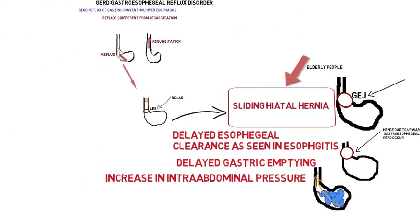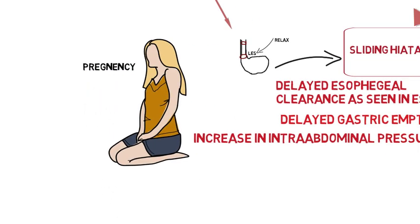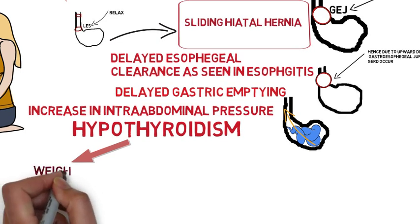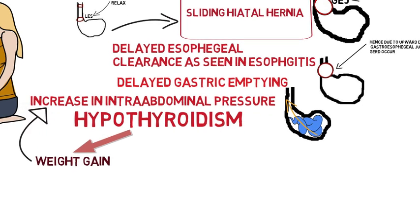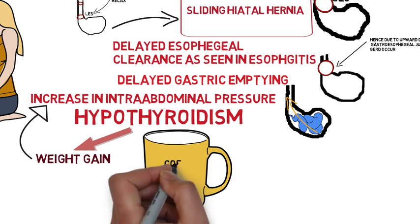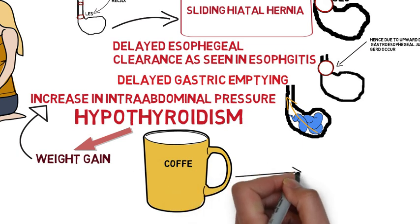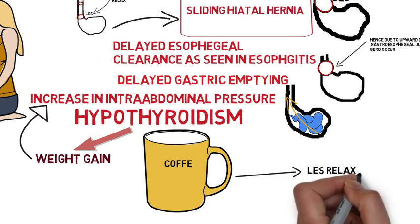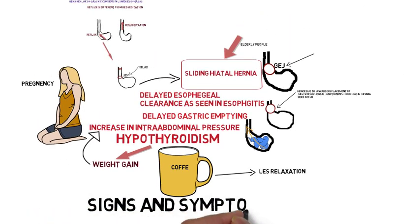Number four risk factor is increase in intra-abdominal pressure, mainly seen in pregnancy. Number five risk factor is hypothyroidism. Basically, hypothyroidism causes weight gain, and this weight gain causes increase in intra-abdominal pressure and hence GERD. Number six risk factor includes diets such as coffee, which causes increased lower esophageal sphincter relaxation and hence GERD.